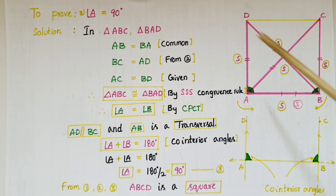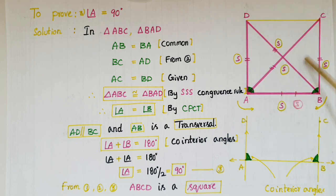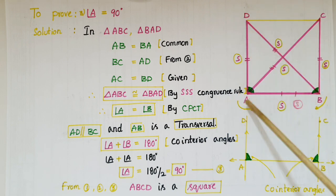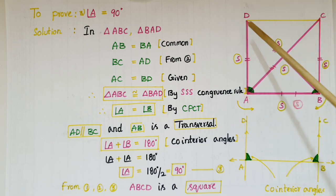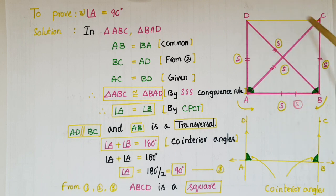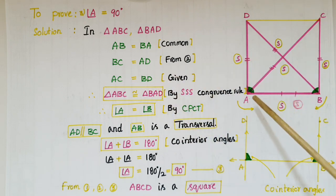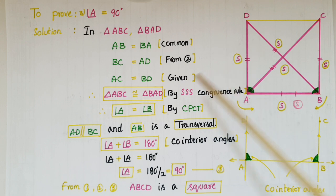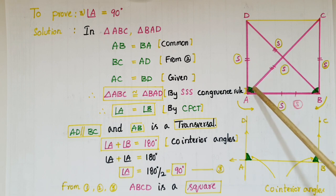Now we prove angle A equals 90 degrees. Take triangle ABC and triangle BAD: AB equals BA as a common side, BC equals AD since all sides are equal, and AC equals BD since the diagonals are equal (given). By SSS congruence, triangle ABC is congruent to triangle BAD. Therefore angle A equals angle B by CPCT.